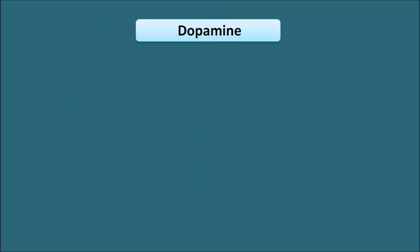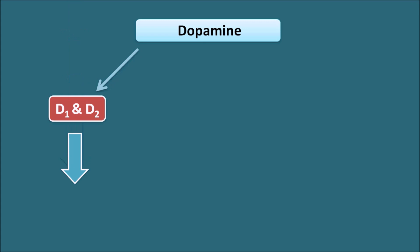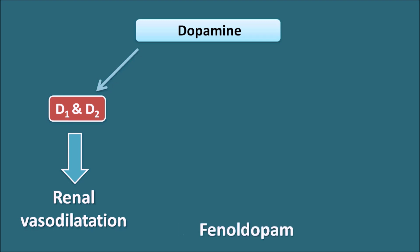Dopamine is a mediator within the CNS and has a different receptor profile. Dopamine can act on D1 and D2 receptors both centrally and peripherally, producing renal vasodilation. The drug fenoldopam is used to decrease blood pressure by increasing renal vasodilation. Dopamine can also act on beta-1 receptors, which increase systolic blood pressure.